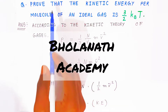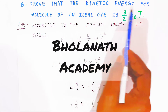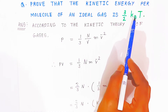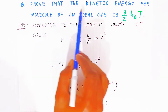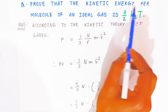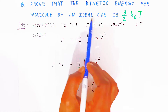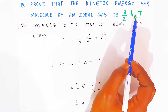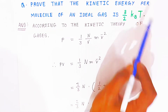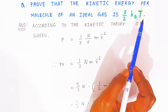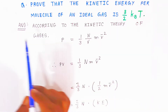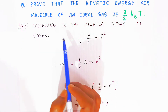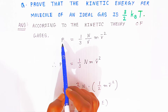In examinations, they ask you to prove that kinetic energy per molecule of an ideal gas equals (3/2)k_BT, where k_B is the Boltzmann constant. Now, to prove this, students, you should know the expression of pressure.